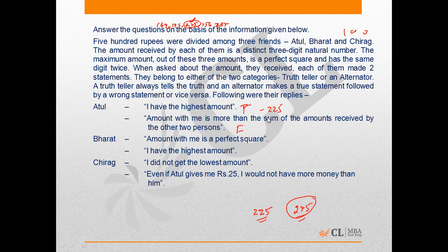Now coming to Bharat. His first statement is 'The amount with me is a perfect square,' and his second statement is 'I have the highest amount.' The second statement is false since the highest amount is received by Atul. Hence, Bharat's first statement must be true, since each person is either a truth-teller or an alternator, meaning at least one of their statements is true.